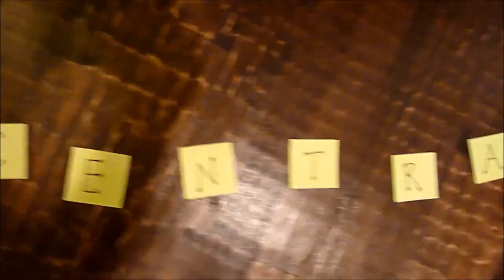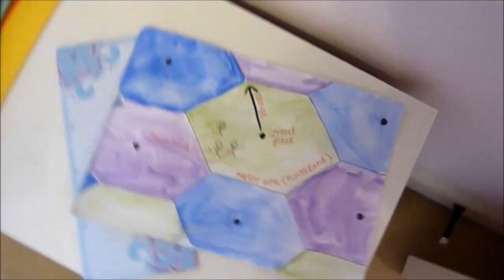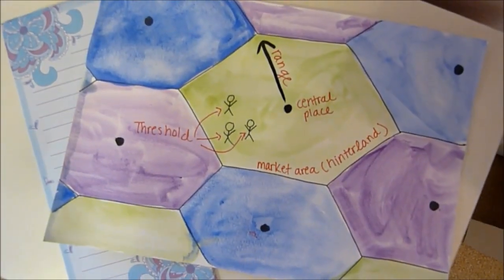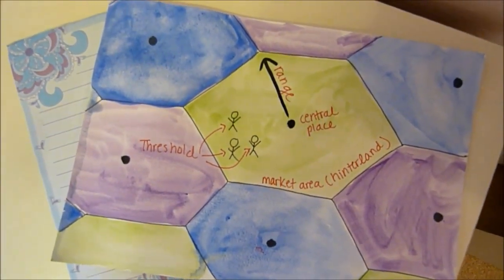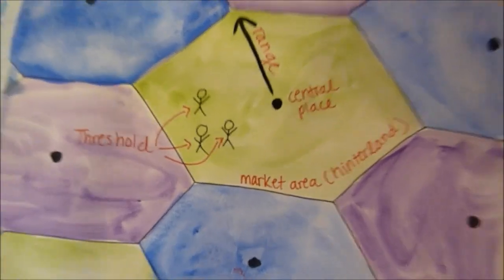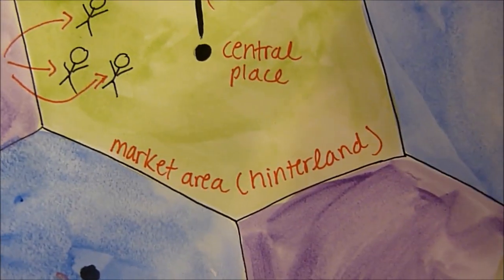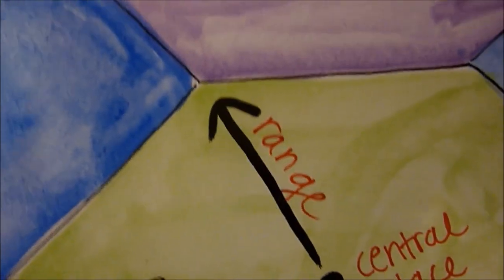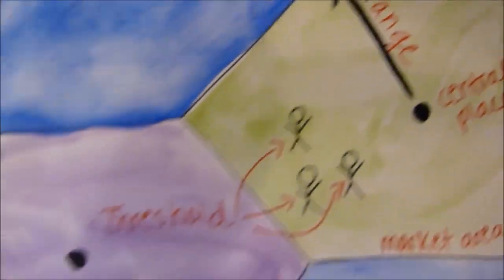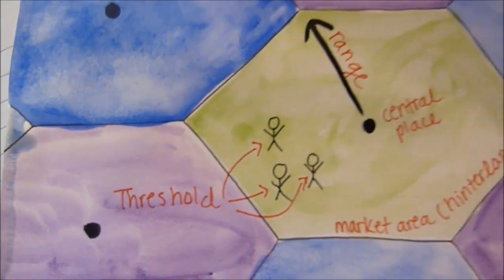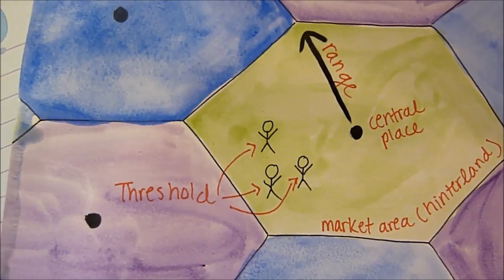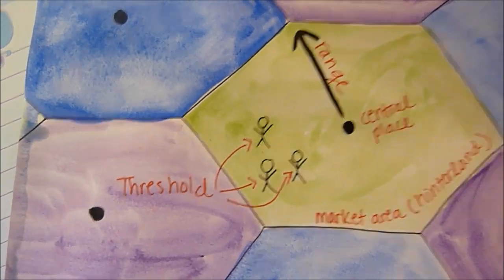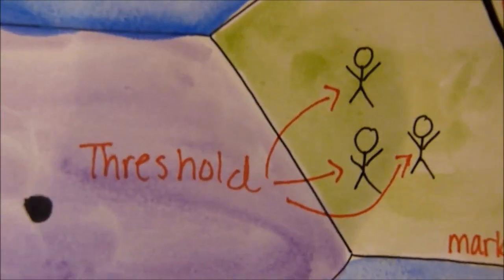Another important settlement geography theory is central place theory, which states that settlements are centers for economic trade and that the surrounding populations depend on the settlement in order to function. This theory, created by Walter Christaller, says that each settlement, or central place, is surrounded by a hinterland, which serves as the market area. The distance from the central place to the edge of the hinterland is the range, which is how far an individual is willing to travel to attain the service. And any individuals who could potentially use the service within the hinterland make up the threshold.